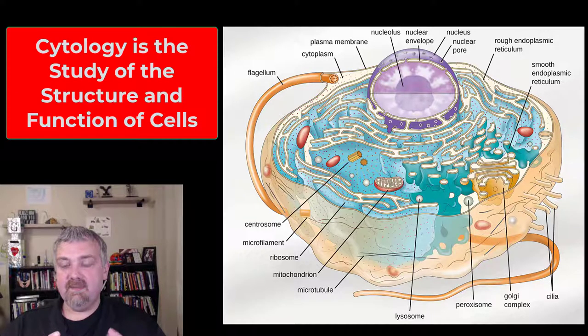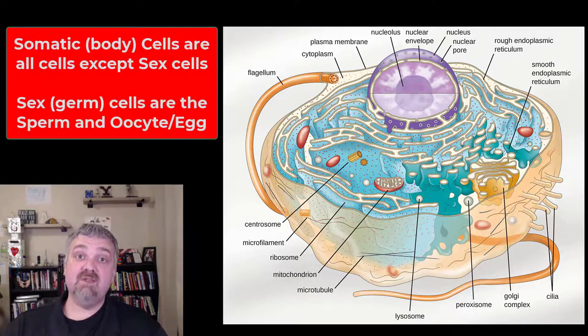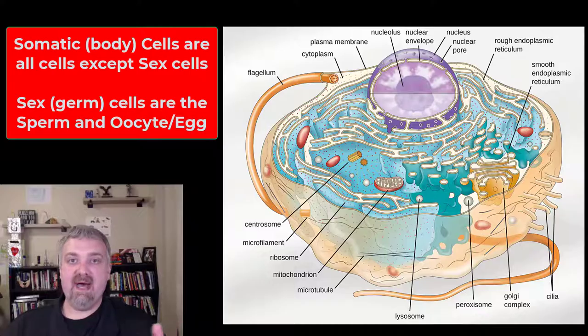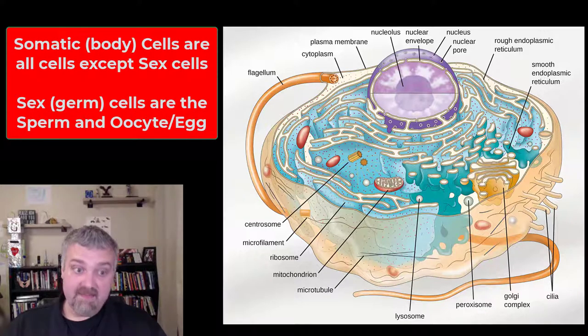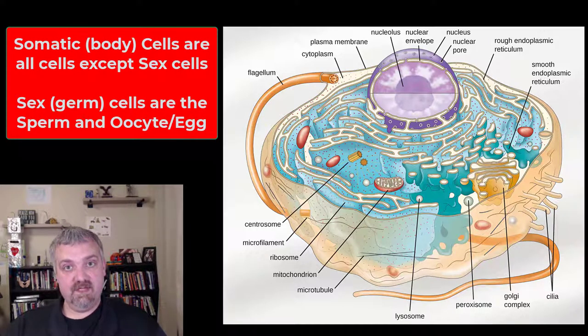There are two major classes of cell types. We're going to spend most of our time talking about somatic cells. So soma means body. Your somatic cells are going to be your body cells, which is every cell in your body except for your sex cells, which are often called germ cells. Those are going to be reproductive cells.